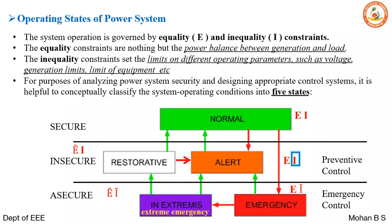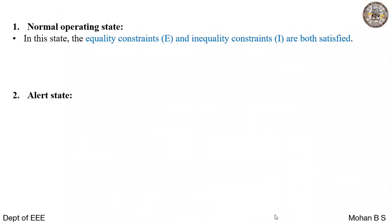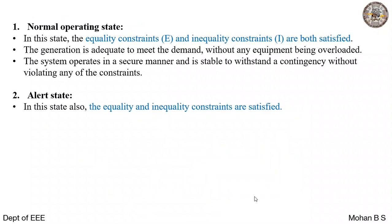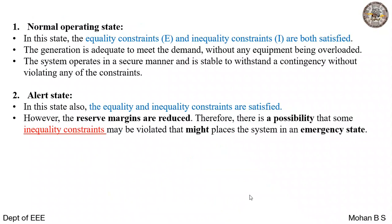In the normal state, as discussed, E and I are both satisfied. Generation is adequate to meet demand without overload, the system operates securely, and it can withstand any contingencies. In the alert state, equality and inequality constraints are also satisfied; however, we see Ī (I-bar), meaning there is a reduction in spinning reserves. There is a possibility that inequality constraints may be violated, placing the system into emergency state.